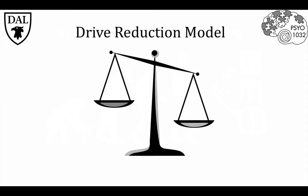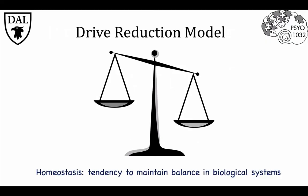Another prominent theory related to the evolutionary model is the drive reduction model. It extends the evolutionary model and adds explanation about the mechanism of motivation. It states that behavior is driven by the need to balance physiological systems when depleted, and is closely tied to the idea of homeostasis — the tendency to maintain balance in biological systems.